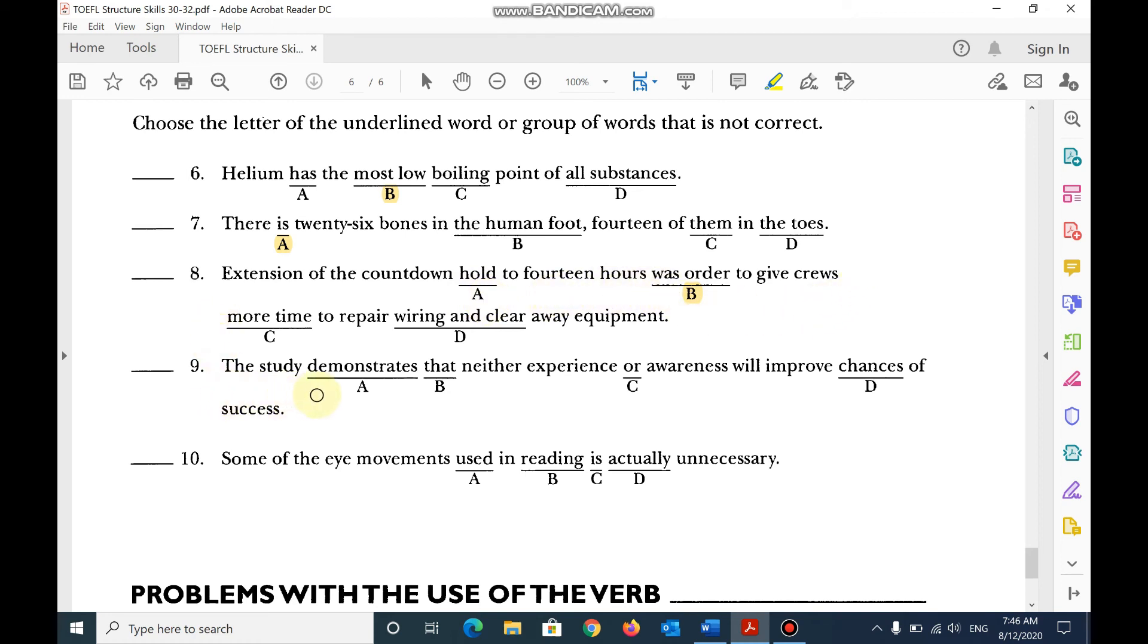Number 9, the study demonstrates that neither experience, oh, neither nor. Remember, when there is no underline, it means it is correct.